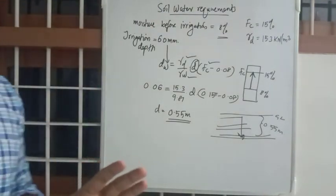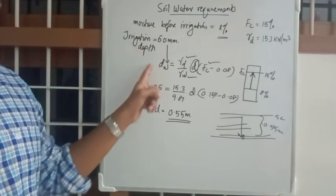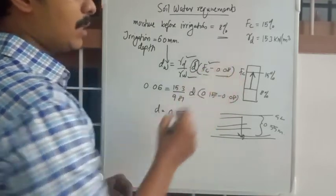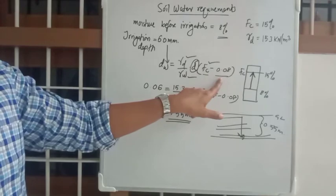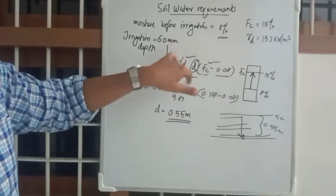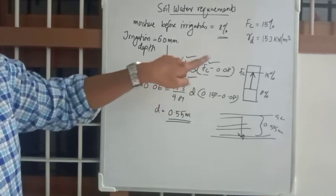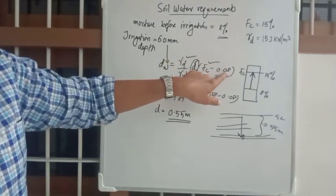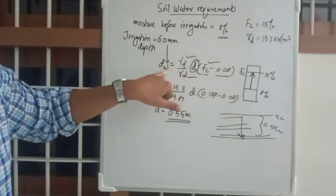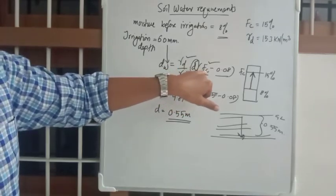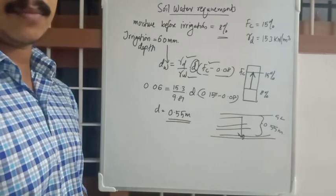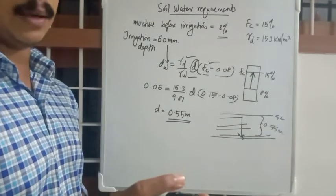Understand the concept: most numerical problems depend on this soil moisture equation. The last part of the expression — the moisture content bracket — will change depending on the question. In this case, WC was not given; instead, the irrigation depth dw was given to raise moisture from 8% to FC of 15%, so we used (FC − initial moisture). I hope you get it — try the remaining problems and ask any doubts. Thank you.